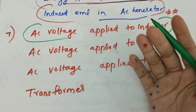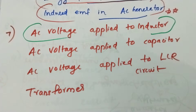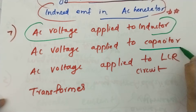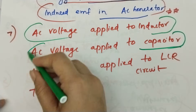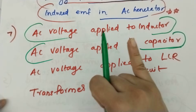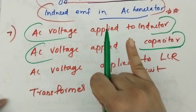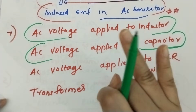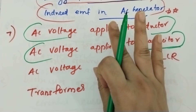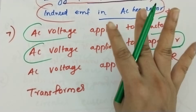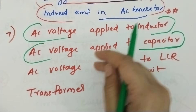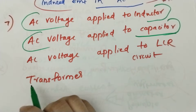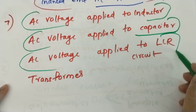This is the definition of AC voltage applied to a capacitor — AC voltage, current, phase diagram, graph, and power. Forward-order derivation — AC voltage applied to LCR circuit.